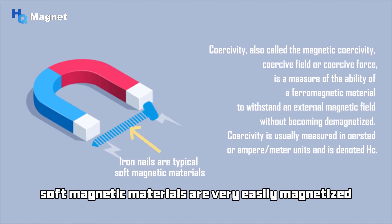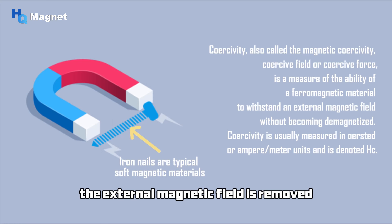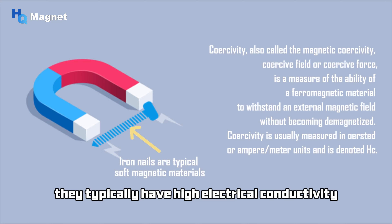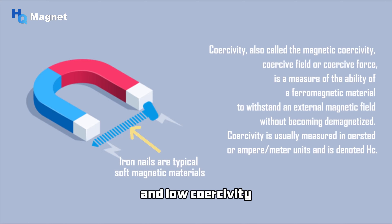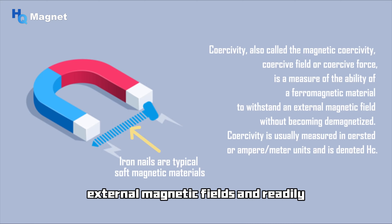Soft magnetic materials are very easily magnetized, but they are also quickly demagnetized after the external magnetic field is removed. They typically have high electrical conductivity and low coercivity, which means they can respond easily to changes in external magnetic fields and readily change their own magnetic state.